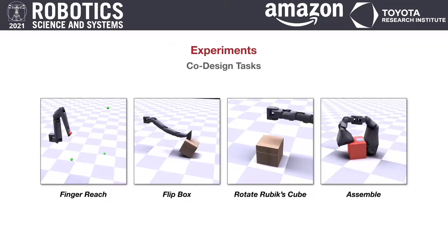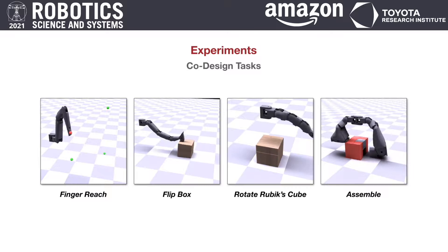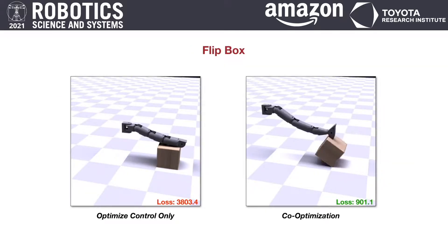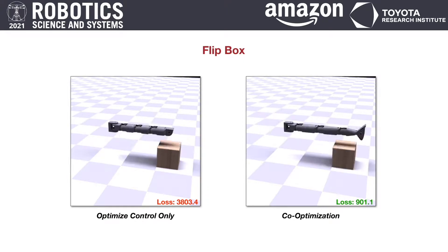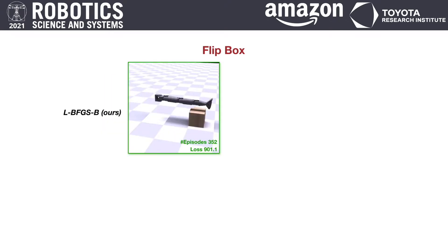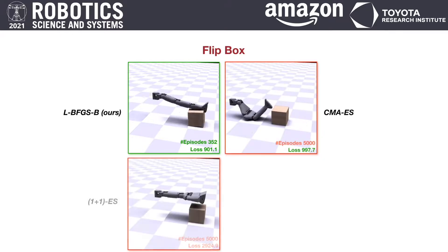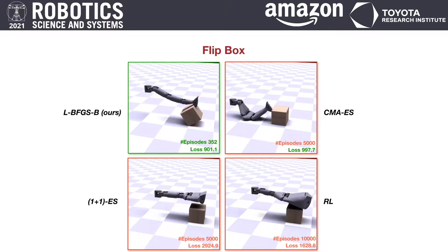We test the efficiency of the gradient-based optimization enabled by our differentiable framework on four co-design tasks. In the first task, the finger is required to flip a heavy box. The video on the left shows that it's insufficient to only optimize the control. By co-optimizing the shape and control through simple gradient-based optimization solver LBFGS, an interesting hook-like structure is evolved to hook on the back surface of the box to flip it more easily. We compare our method to gradient-free methods such as CMAES, 1+1 ES, and a reinforcement learning-based method. The results show that our method is able to find better morphology and control combinations while using 10 to 20 times fewer simulation iterations.